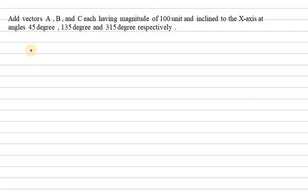Hello everyone. Let's start with question number 3 of Physics and Mathematics, chapter 2 of H.C. Verma. It says: add vectors A, B, C, each having a magnitude of 100 units and inclined to the x-axis at angles 45, 135, and 315 degrees.